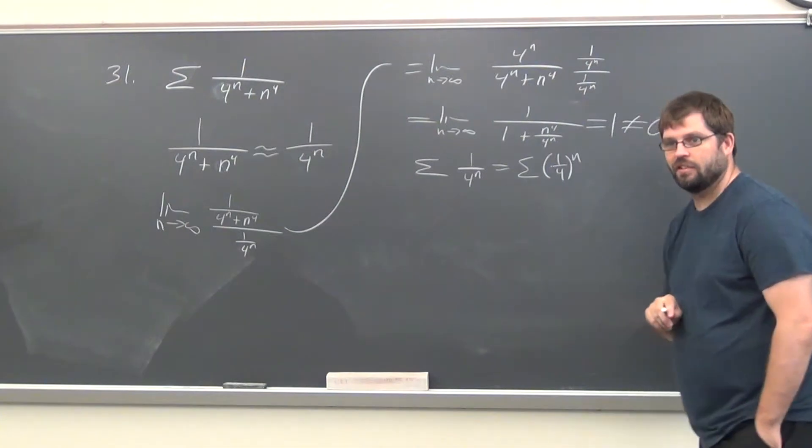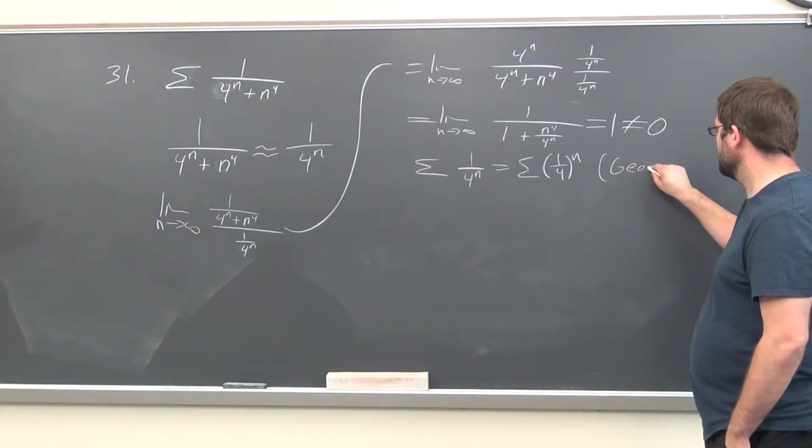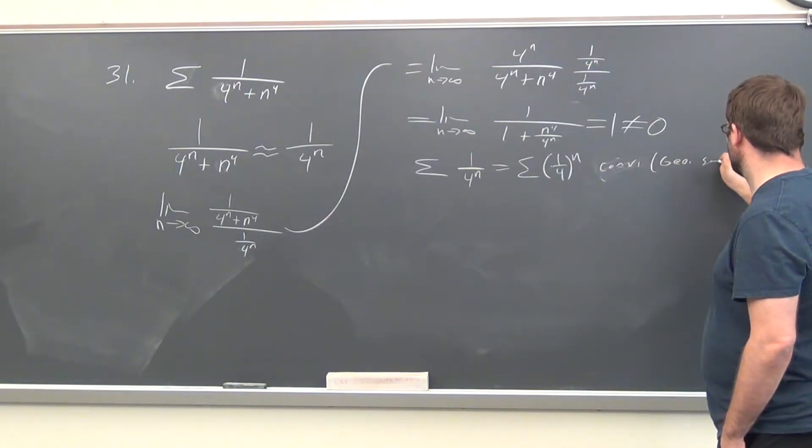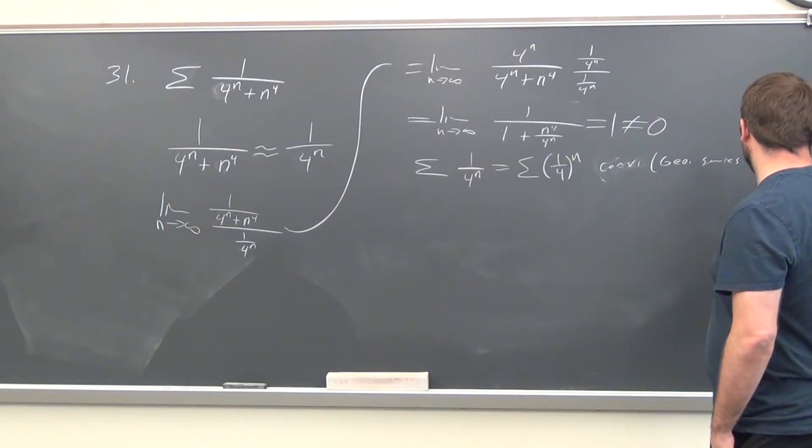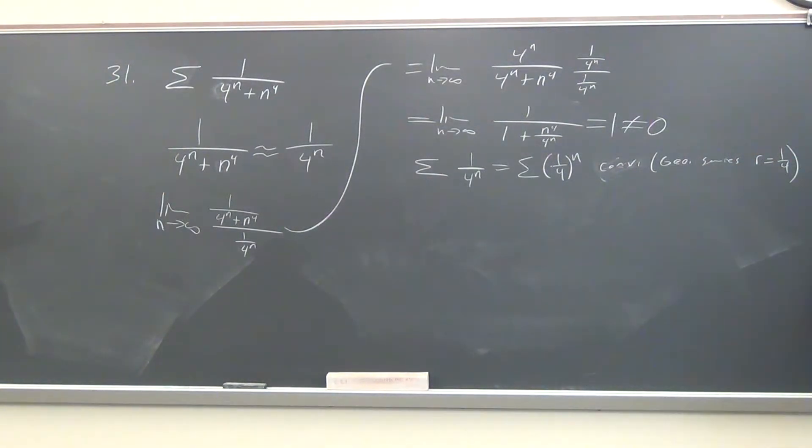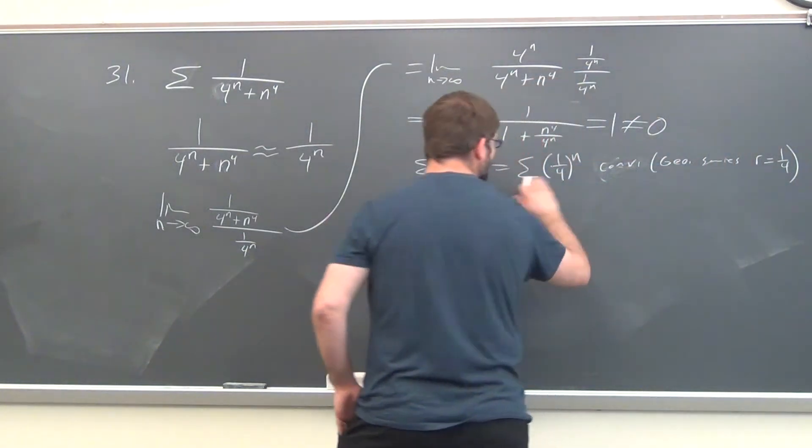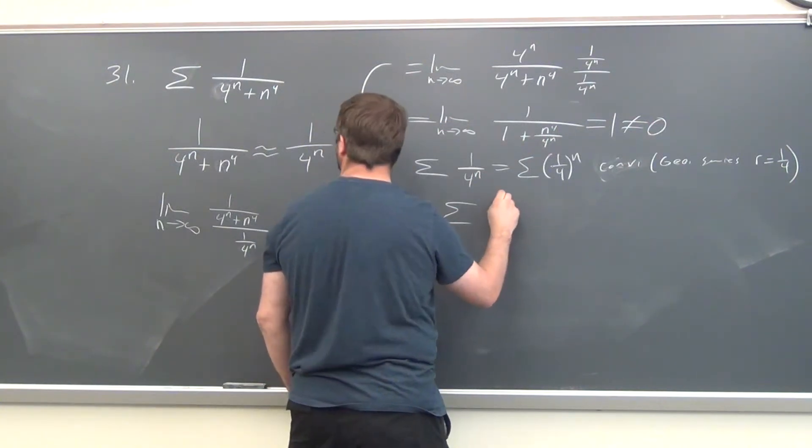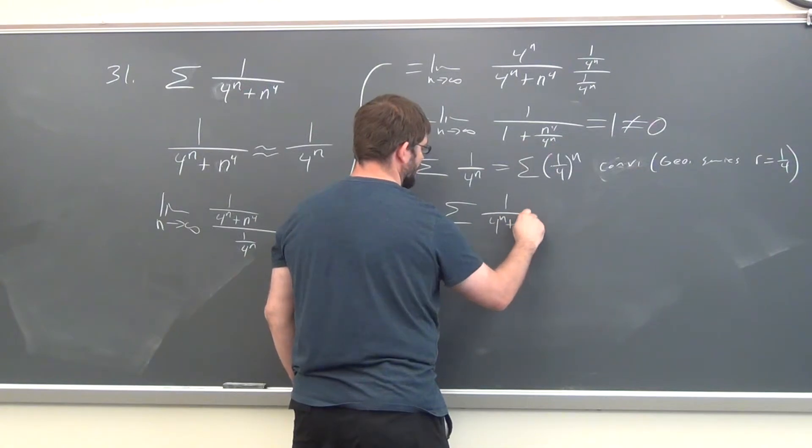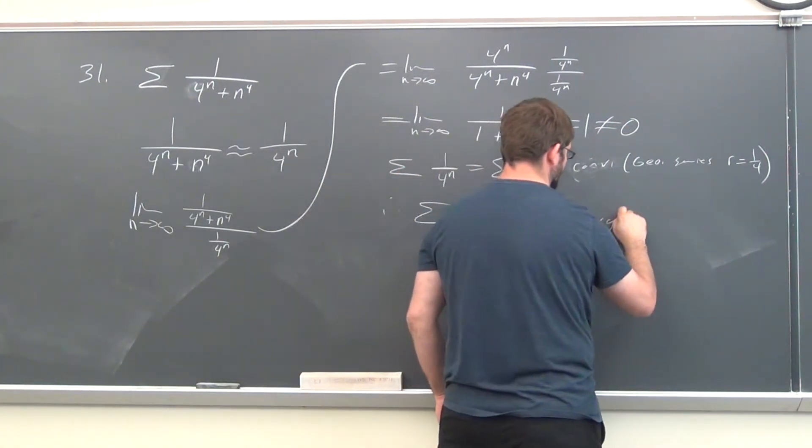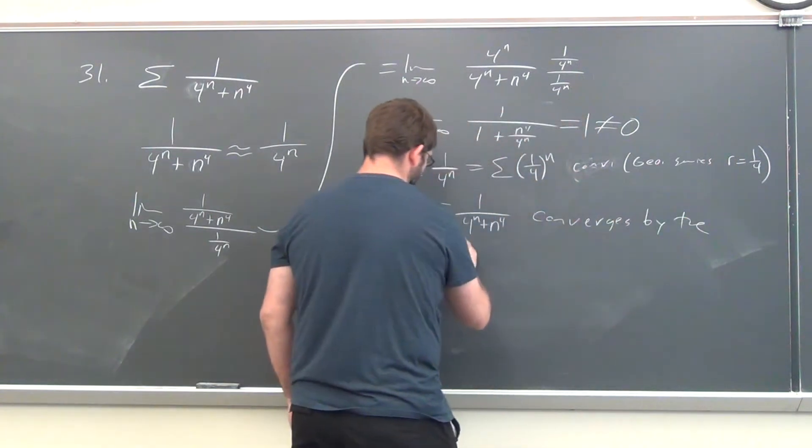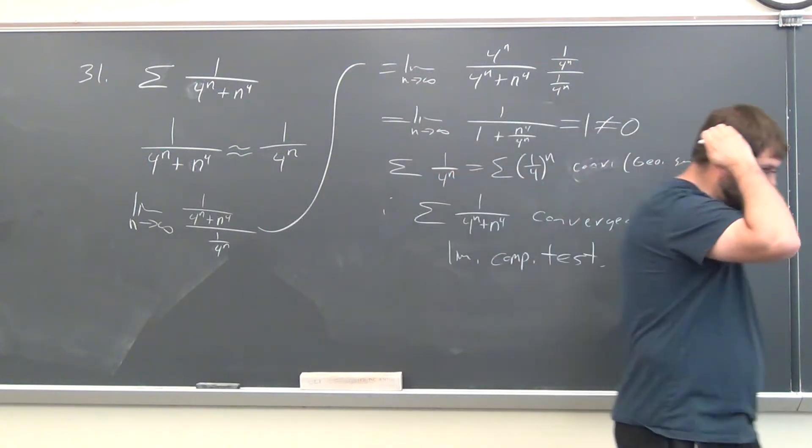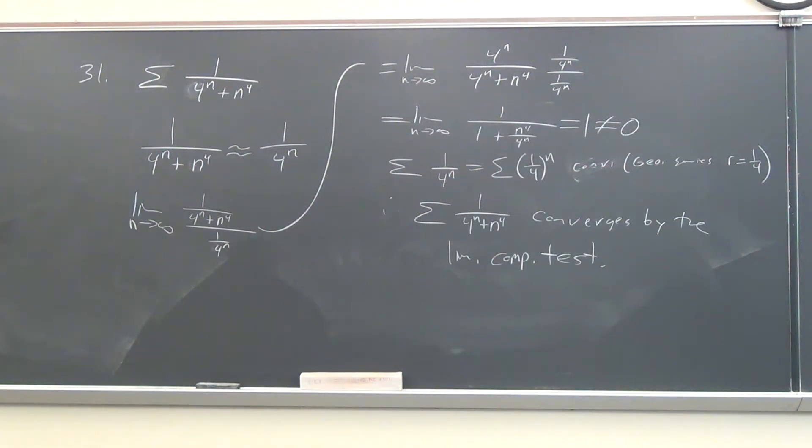Now the limit comparison test - oh, and we also should mention, does that series converge or diverge? Converge. So we go like that. What kind of series is it? Geometric. I should just say converges as a geometric series with r equals 1 fourth.